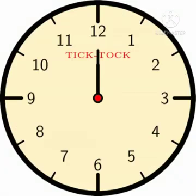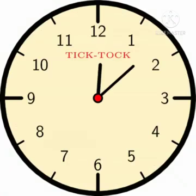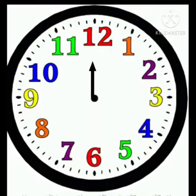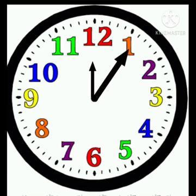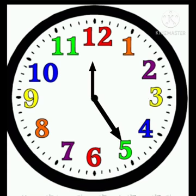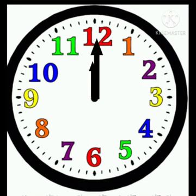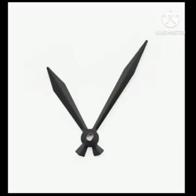You will notice that both hands are spinning in the same direction. We call this clockwise. So, from 12 we go to 1, 2, 3, 4, 5, 6, 7, 8, 9, 10, 11 and back to 12. So, the clock has two hands. Now, these little pointers are called hands.